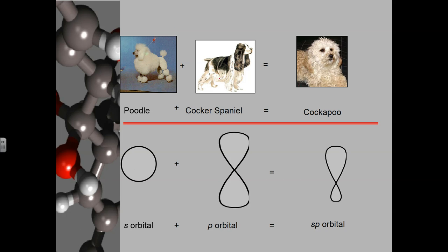Hybridization is a mixing. If you were to breed a poodle with a cocker spaniel, you'd have a cockapoo — a hybrid breed. Just like a labradoodle mixes a Labrador retriever and a poodle, or a goldendoodle is a golden retriever and a poodle. You have hybrid animals, hybrid cars, hybrid plants. Hybridization is not a new concept, but when we apply it to bonding, we're making hybrid bonding orbitals.